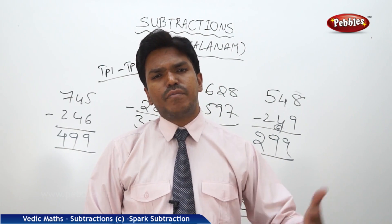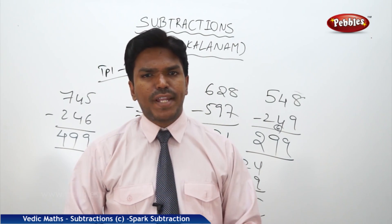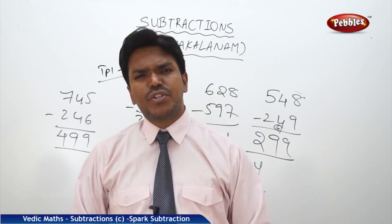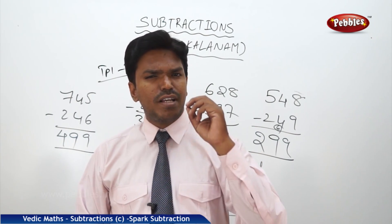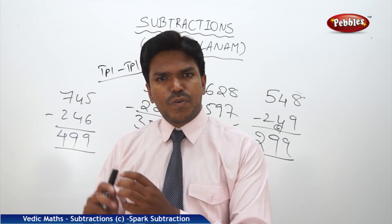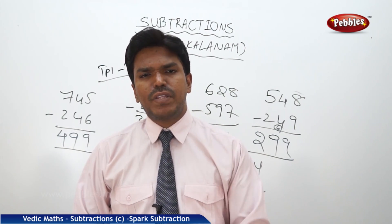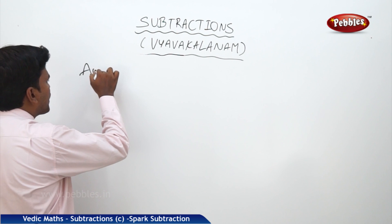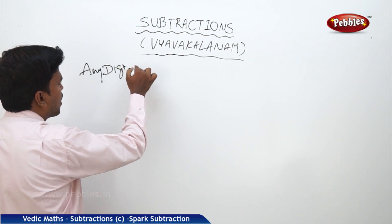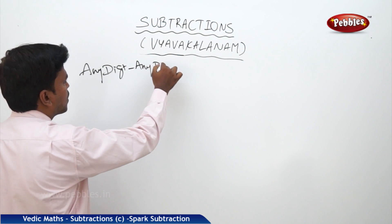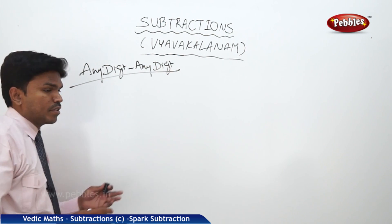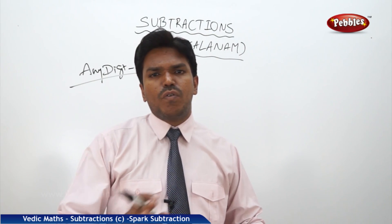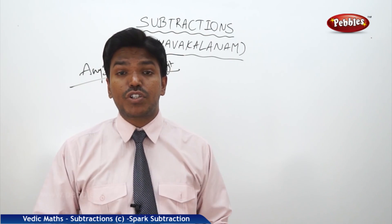Like that we can do any digit minus any digit. Now finally we will take one big number — 10 digit minus 10 digit subtraction — which you might think is very difficult and will take a lot of time. But we are going to do it within a few seconds. Any digit minus any digit — it's your wish. When you practice perfectly, you can even do it faster than me.